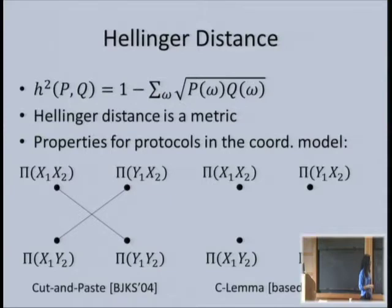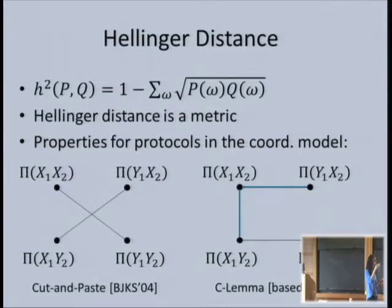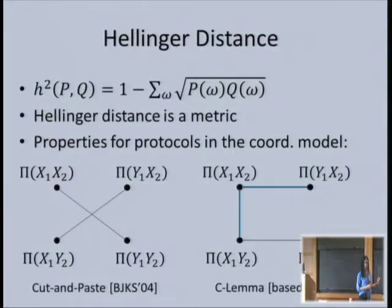The other property is what I call the C lemma—it follows from a property shown by Bar-Yossef et al. Take any rectangle and any three adjacent sides. The sum of two of the sides is at least as big as the third in Hellinger distance. Take any C shape: the first two sides are at least the third.